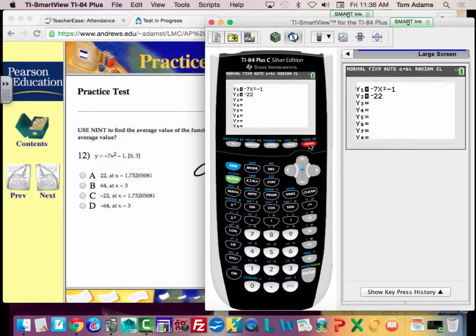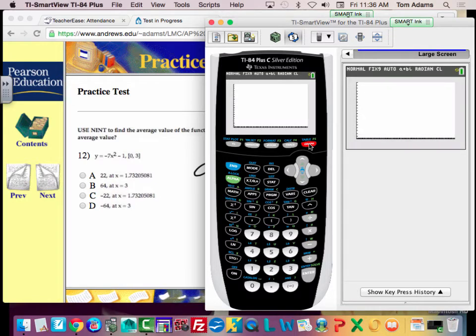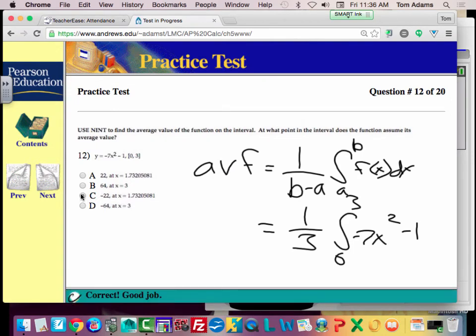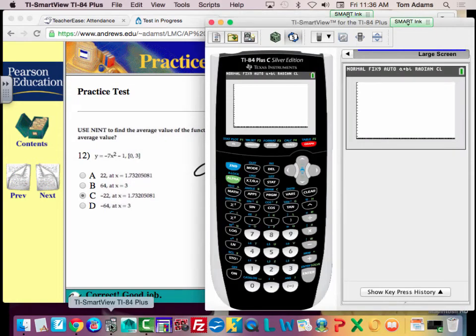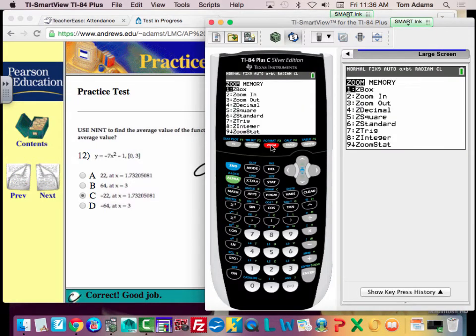Okay, so if I hit graph, I got to zoom out. The answer is C, though, just the way it is. But let me show you where that comes from. So if I zoom fit 0.